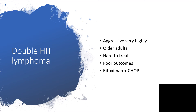Double-hit lymphoma is very aggressive and is found in older adults. It is hard to treat, predictably so, and has poor outcomes. For treatment of non-Hodgkin lymphoma in this setting, you use rituximab plus CHOP — that is cyclophosphamide-based chemotherapy.